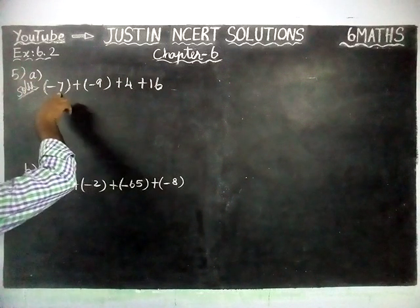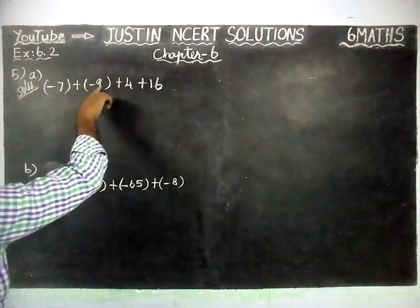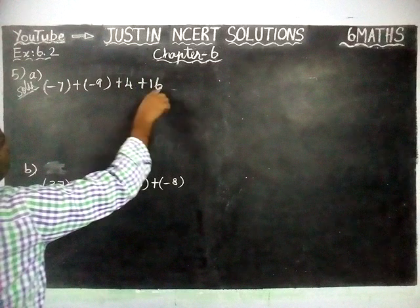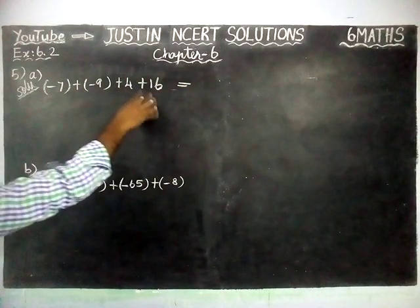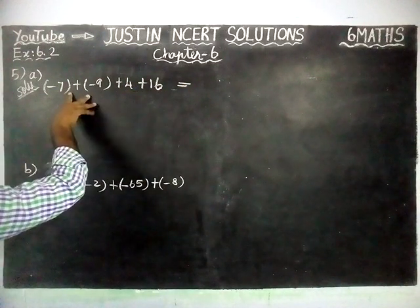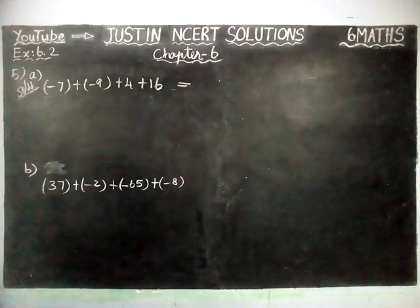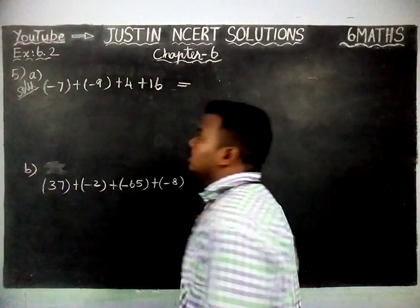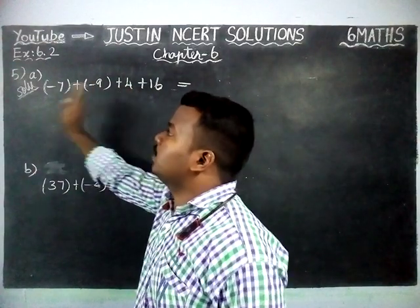So, you see, -7 + (-9) + 4 + 16 is equal to here. We have totally 4 integers. Out of 4, 2 negative, 2 positive integers. So now, we are going to add 2 positive integers separately, 2 negative integers separately.